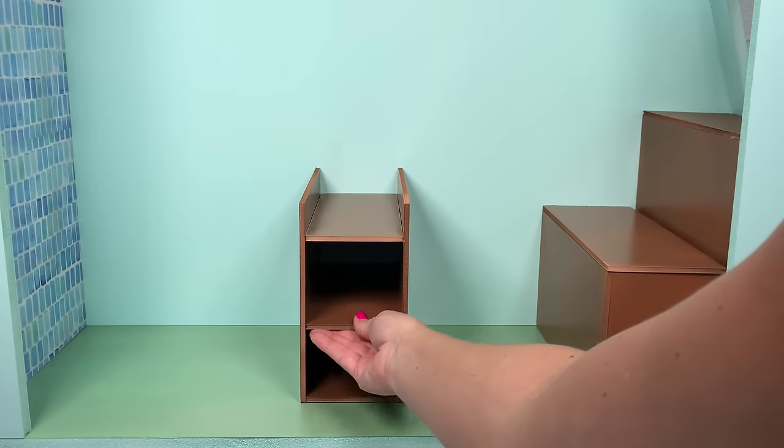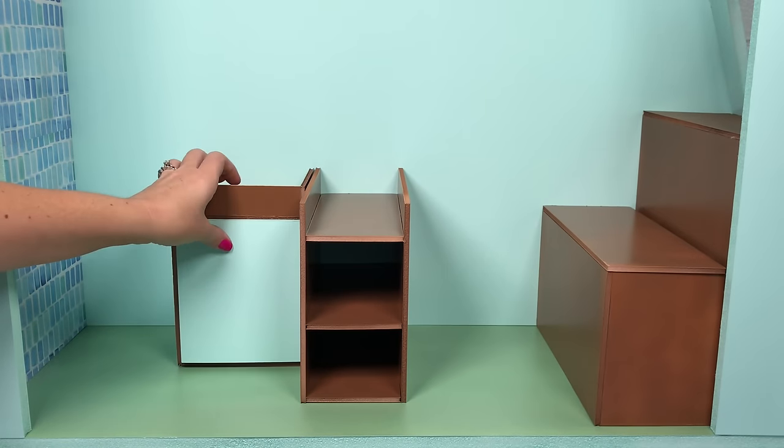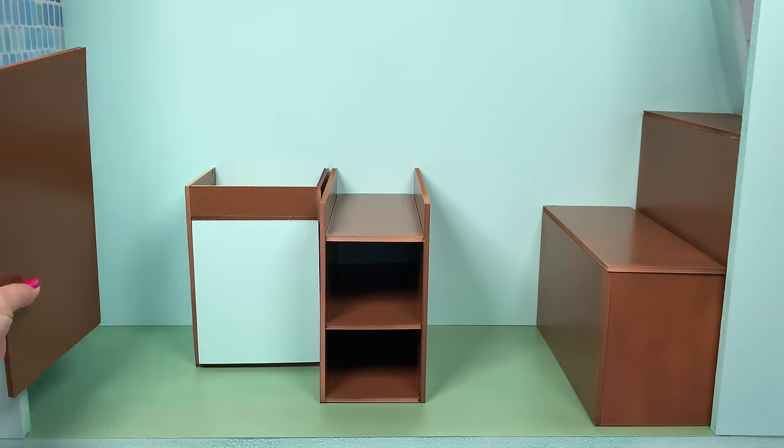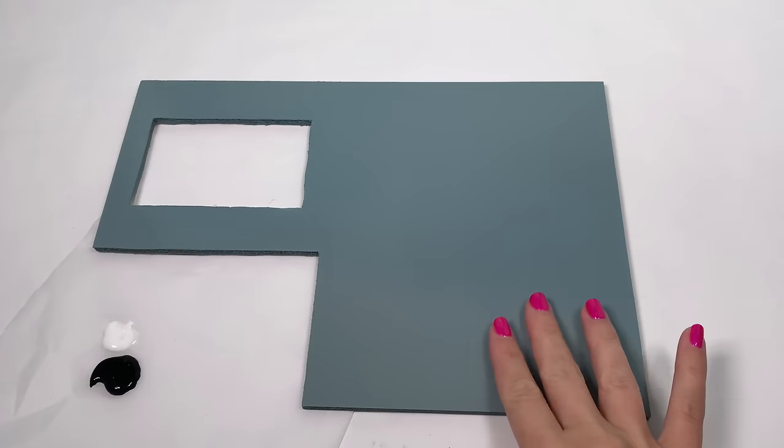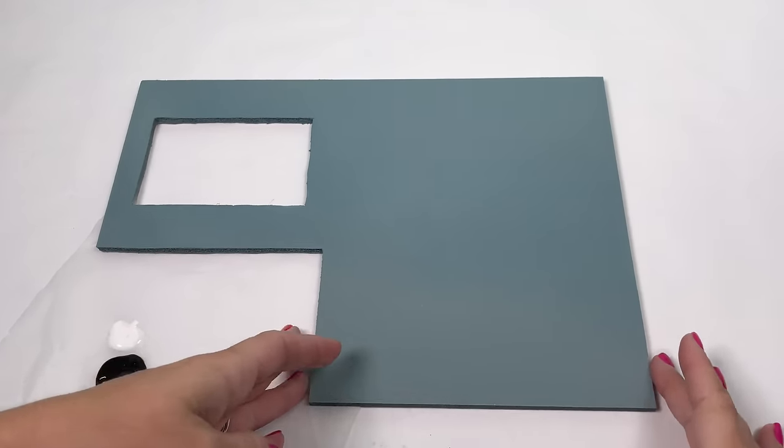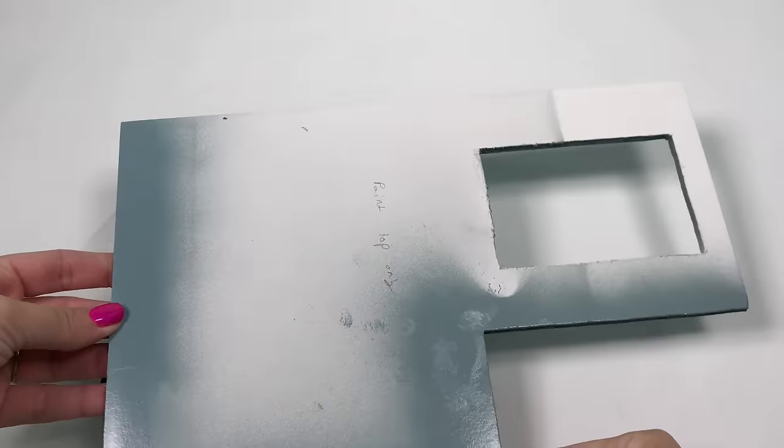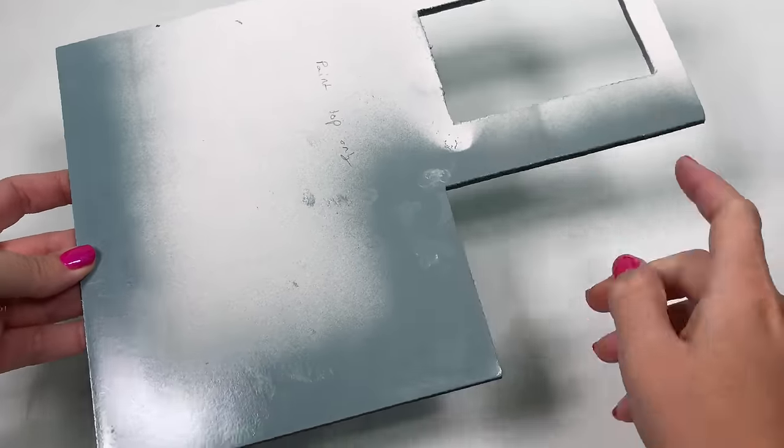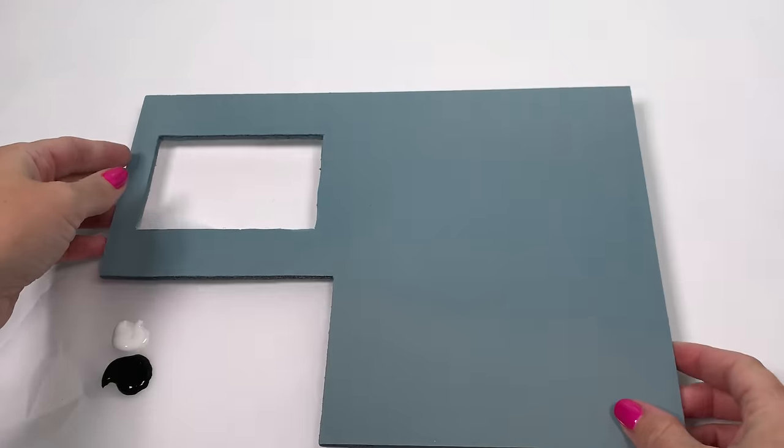Now glue into place your cabinets and your fridge inside the camper. Also glue into place the wall divider for the shower. For the kitchen countertop, I gave it a base coat of gray.